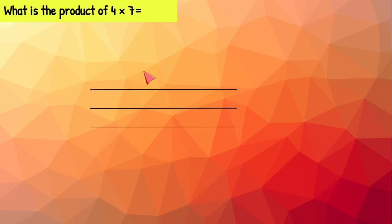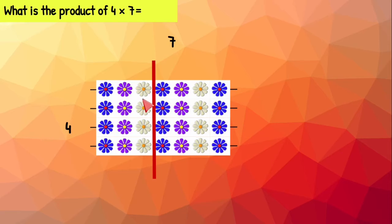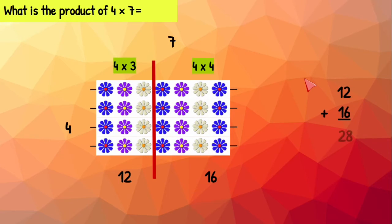Four times seven means four rows with seven flowers on each row. Let's go ahead and chop the array. Now we have two smaller arrays on each side. On this array we have four rows with three flowers on each row. We know four times three equals 12. On this array we have four rows with four flowers in each row, which makes four times four, and that equals 16. We can put both of those together — four times three and four times four — which equals 12 and 16, and that gives us 28. Four times seven equals 28.